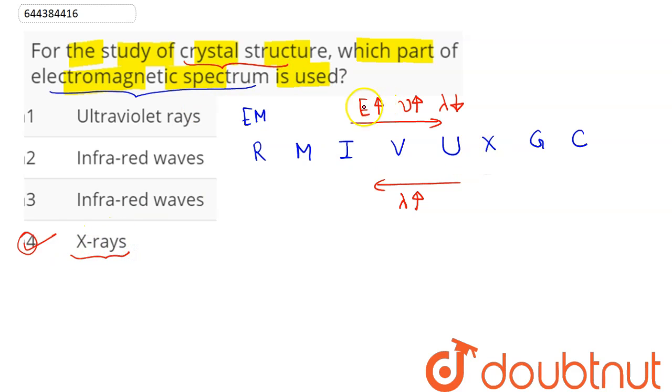We can say here due to its high energy, high frequency or low wavelength, these X-rays are used to study molecular arrangement, that is how electrons are arranged.